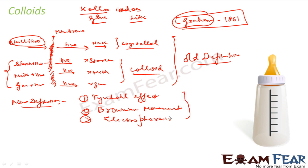The new definition says any aqueous solution — or any solution — which shows all these properties is called a colloid. This is because it is difficult to know whether a substance can pass through a membrane; it's a difficult experiment. You have to find the membrane, pass the whole solution through it, check the concentration of starch and water in the output, and make an assumption — that's a difficult process.